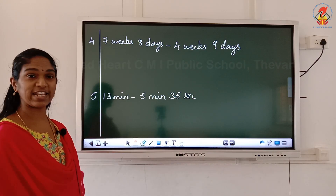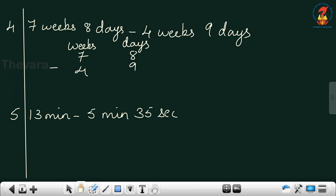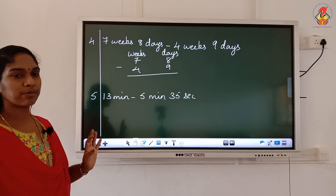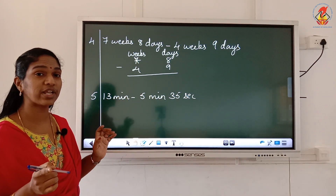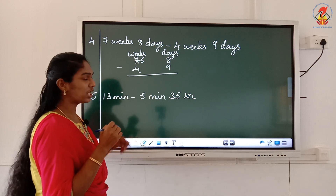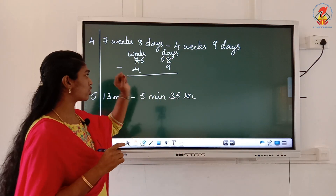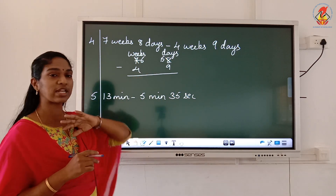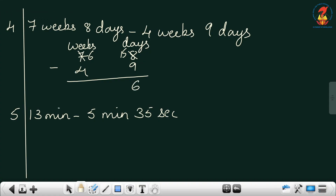Now with weeks and days: 7 weeks 8 days minus 4 weeks 9 days. Again 8 minus 9 is not possible, so I borrow 1 week from 7 weeks, leaving 6 weeks. 1 week is 7 days. I add 7 and 8 to get 15. Now 15 minus 9 is 6. Then 6 minus 4 is 2. Answer: 2 weeks 6 days.